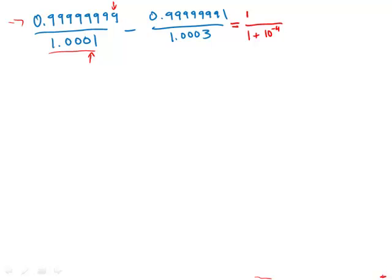Similarly, the numerator there is one minus a single one that is eight places after the decimal point — that is one minus ten to the negative eighth. In similar logic, the numerator of the second fraction can be written as one plus three times ten to the negative fourth, and the denominator can be written as one minus nine times ten to the negative eighth. So right away we've simplified everything a bit in terms of powers.